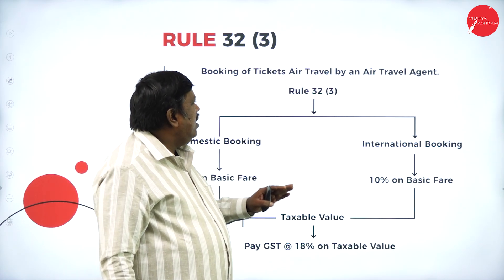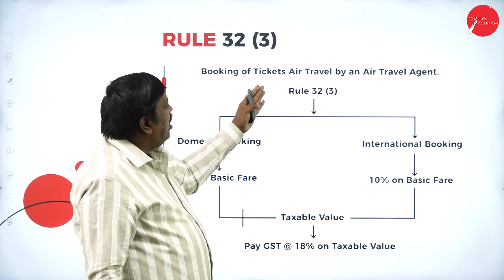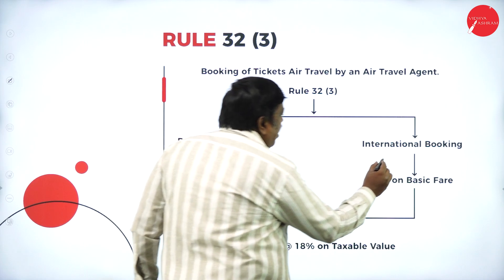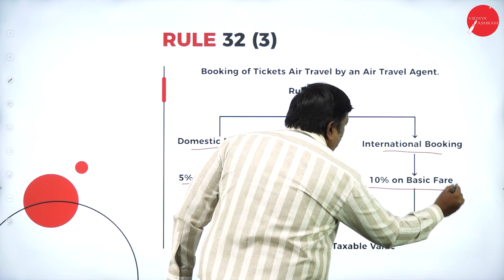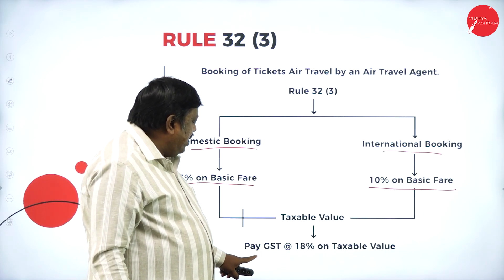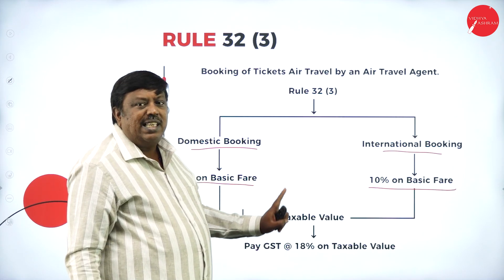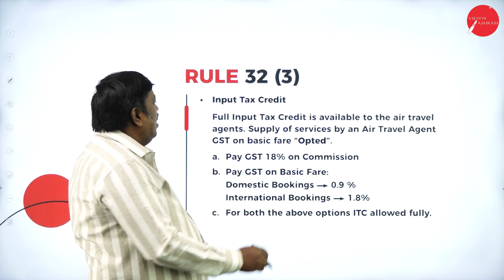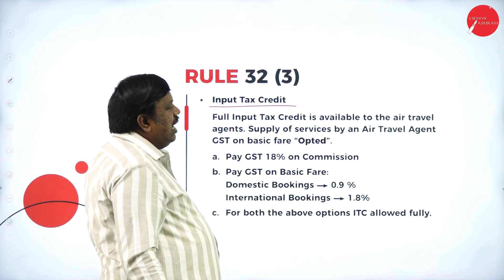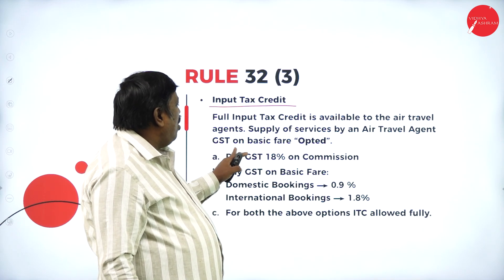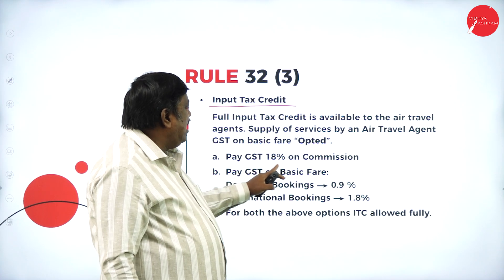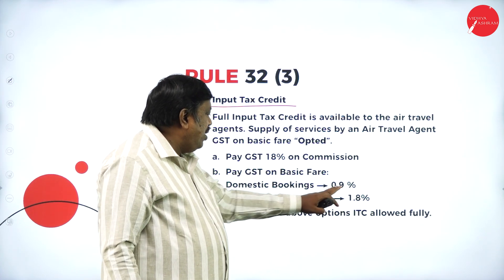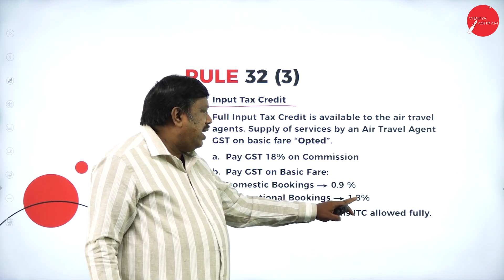Rule 32 sub-clause 3 is for air travel agents booking air tickets. For domestic booking: 5 percent on basic fare. For international booking: 10 percent on basic fare. This is the taxable value, and GST is payable at 18 percent on that taxable value. Regarding input tax credit: if GST is opted on basic fare, then pay GST at 18 percent on commission — that results in 0.9 percent for domestic and 1.8 percent for international.